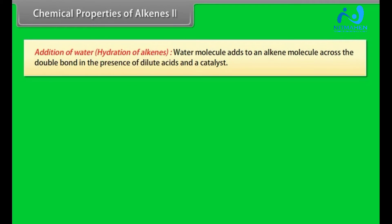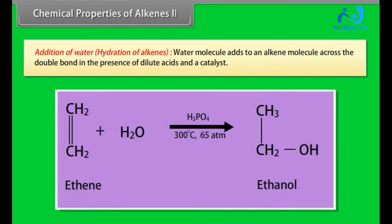Addition of Water - Hydration of Alkenes: Water molecules add to an alkene molecule across the double bond in the presence of dilute acid and a catalyst. For example, ethene gives ethanol when a mixture of ethene and steam is passed over phosphoric acid and silica under a pressure 65 atmosphere and at 300 degree centigrade.